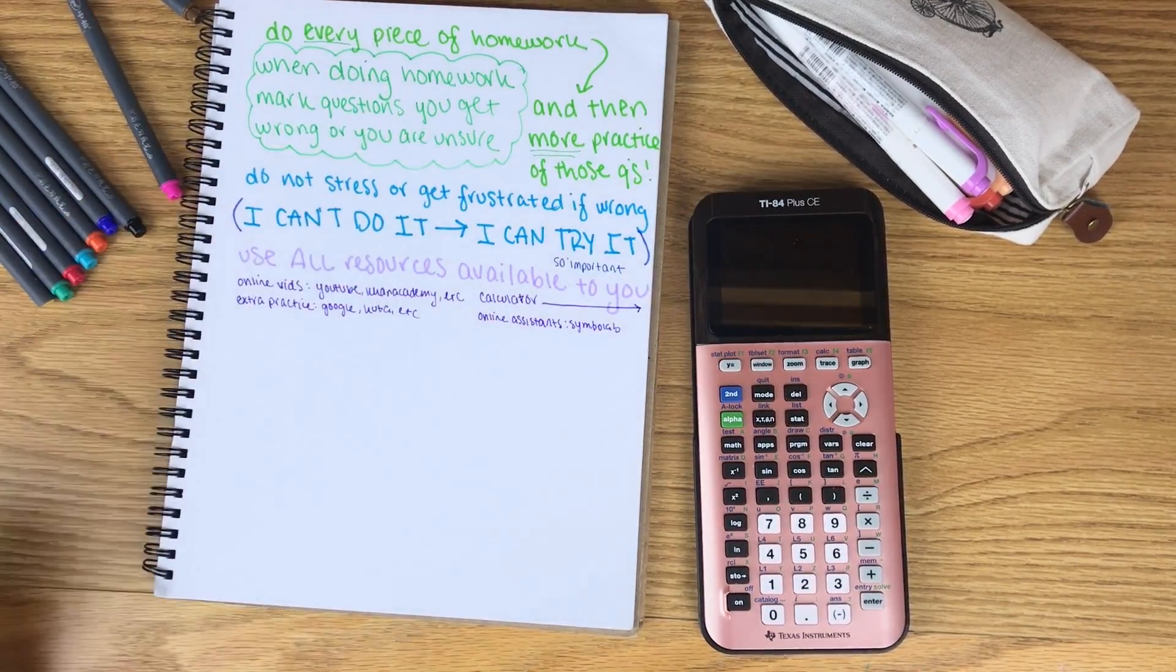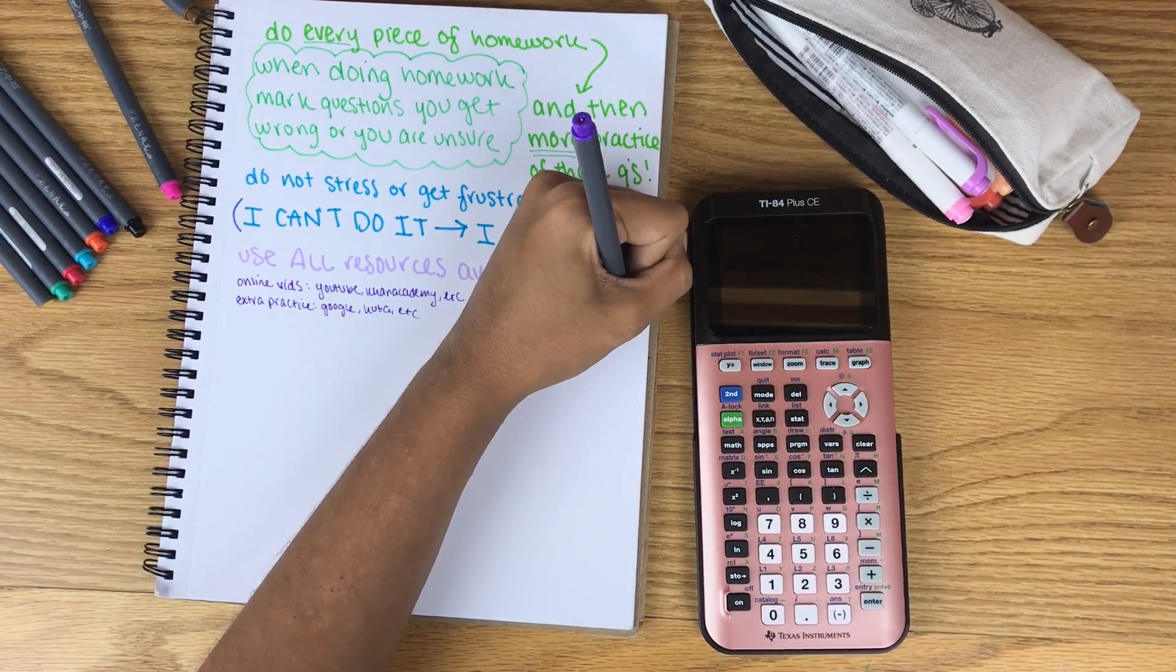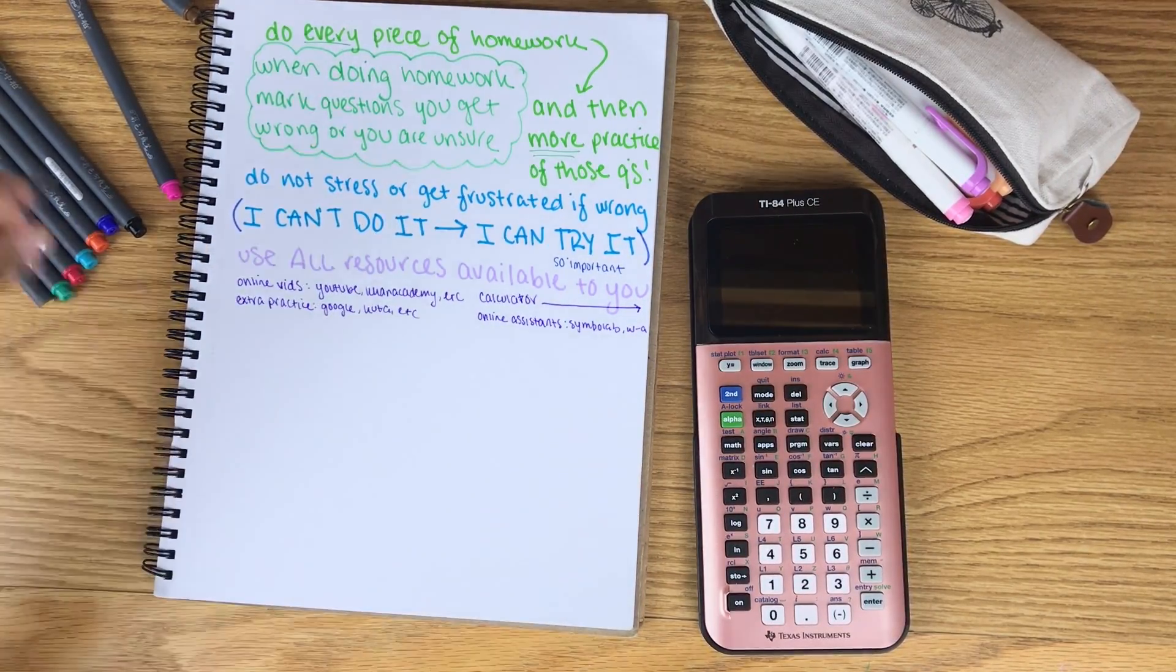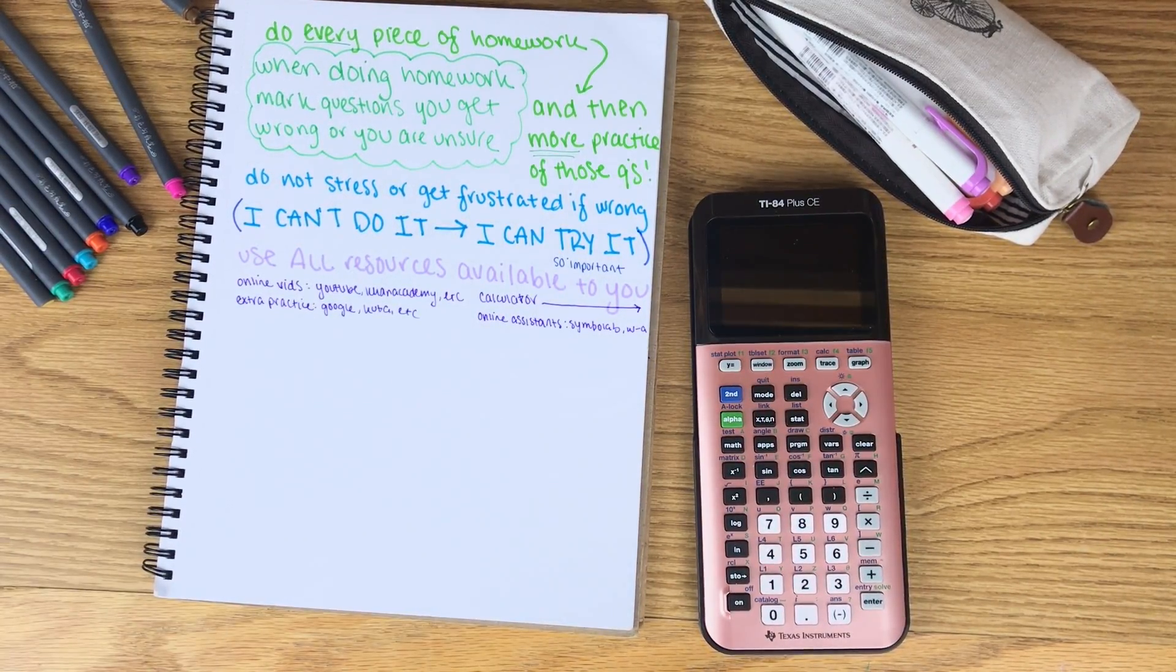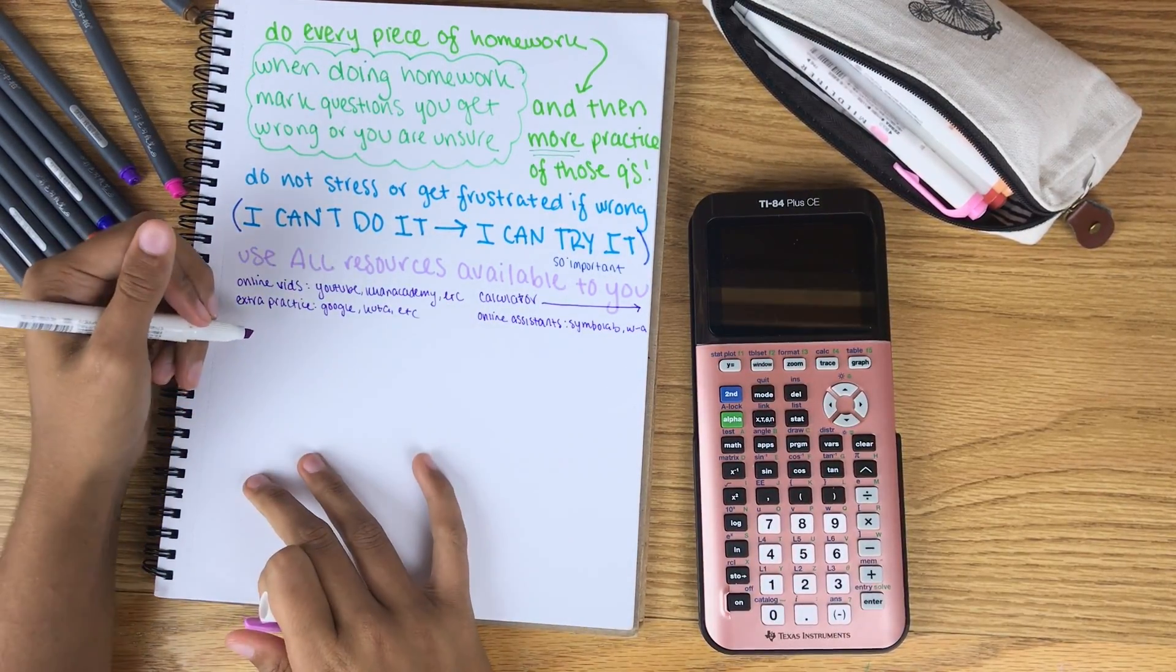And same goes for the online sort of like assistant calculators that show you the steps. That can be like Symbolab or Wolfram Alpha, stuff like that. So again, if you guys have your own suggestions, definitely leave those in the comments. My eighth tip is to obviously ask for help.